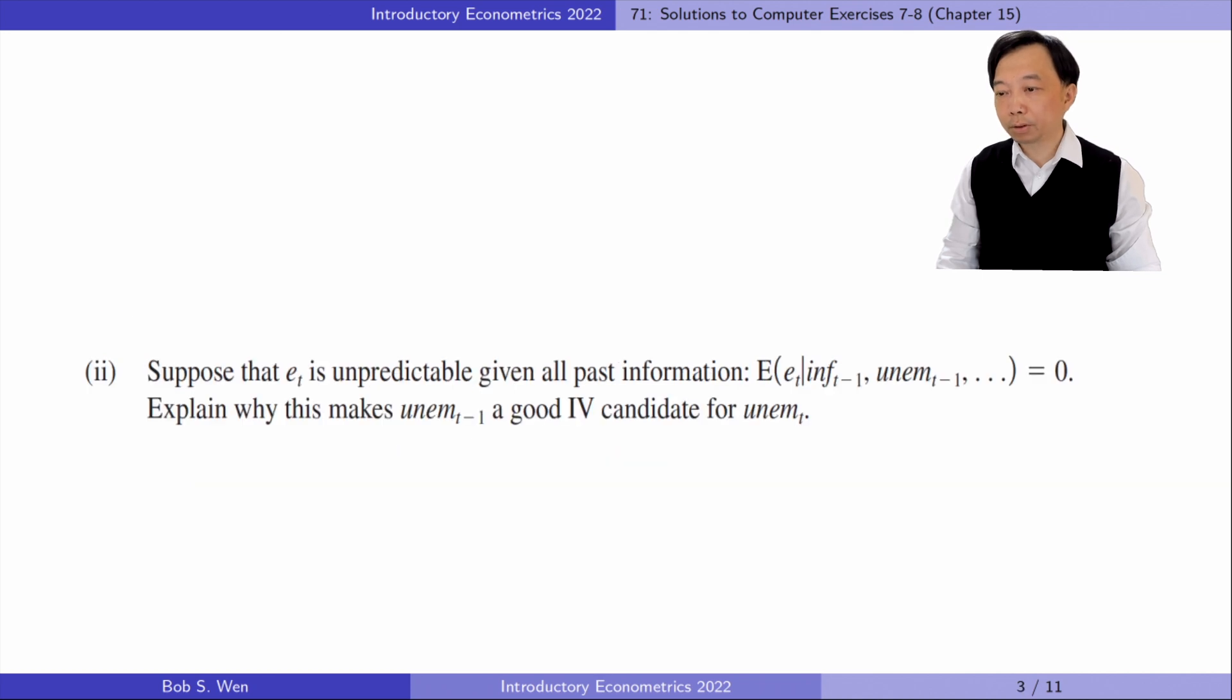In part 2, suppose that ET is unpredictable given all past information. Explain why this makes unemployment in T-1 a good IV candidate for unemployment in T. If unemployment in T-1 is uncorrelated with the error term ET, the instrument exogeneity requirement is satisfied. It makes it a good IV candidate.